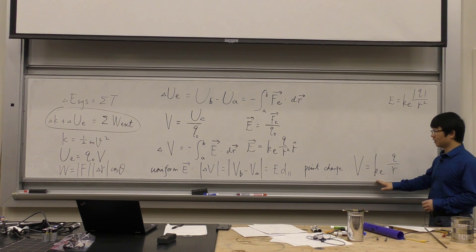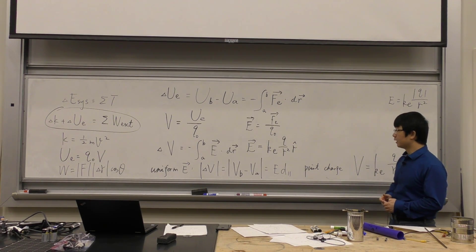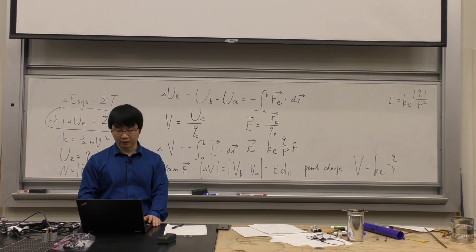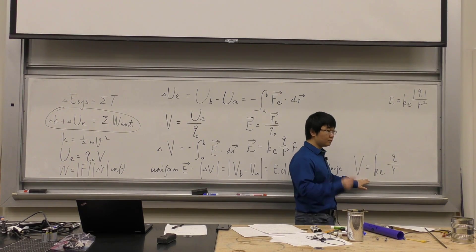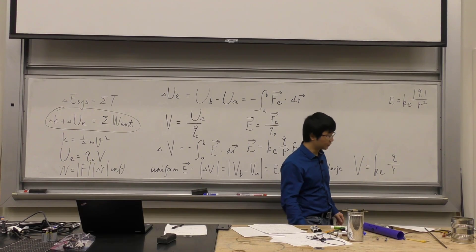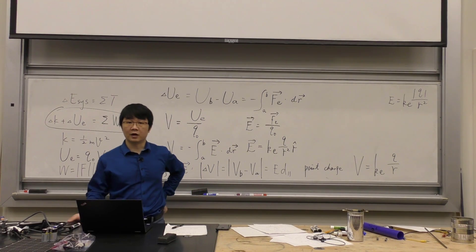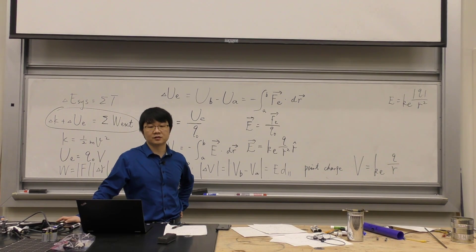I'm not going to ask you to derive these. We're just going to go ahead and use them. If we generalize to a group of point charges, you use this theory for every single point charge, and then you get a bunch of numbers. You just add them literally, because this is a scalar — it doesn't have any direction. You don't need to draw arrows or break it into X and Y components. That's one of the reasons we study potential and potential energy: because they're scalars.